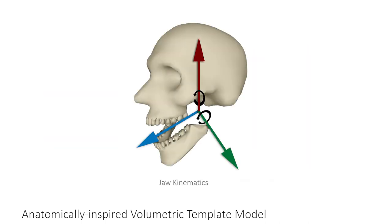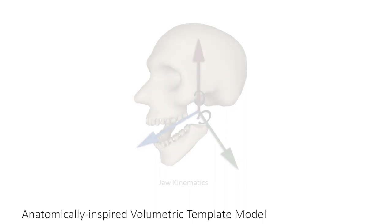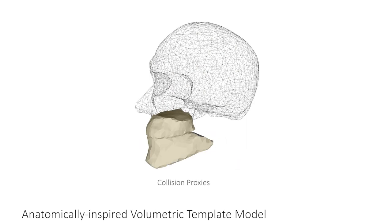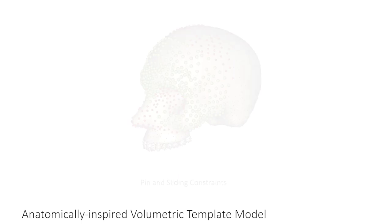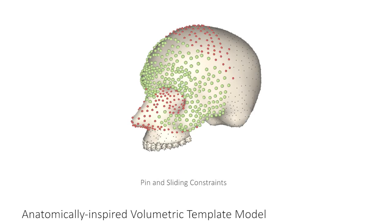Apart from deforming muscle tetrahedra in order to perform expressions, we equip our model with jaw kinematics. The jaw bone has five degrees of freedom encoded as parameters in our model. In order to simplify the collision detection and resolution tasks, we use lower-resolution collision proxies for the upper and lower teeth. Finally, in order to simulate skin sliding, our physics optimization distinguishes between regions where the flesh can slide on the bone and regions where it is fixed.